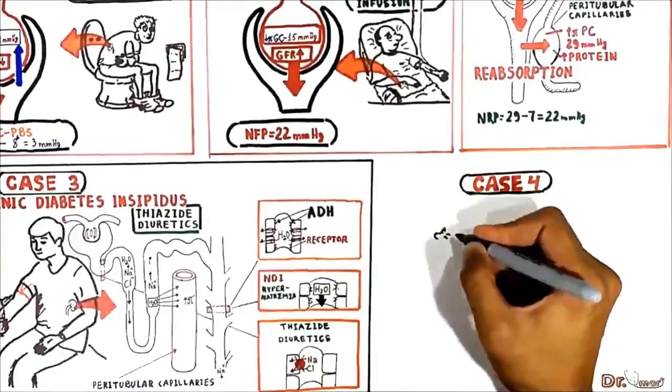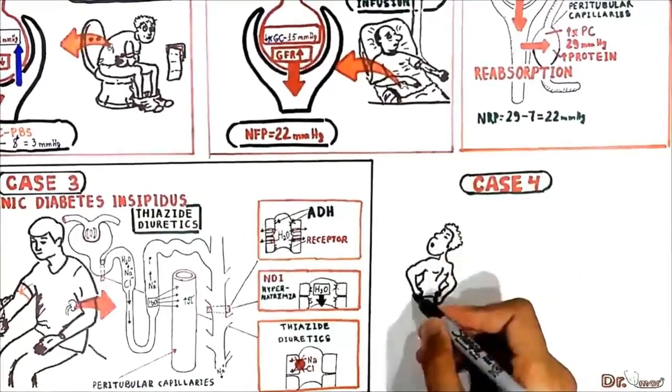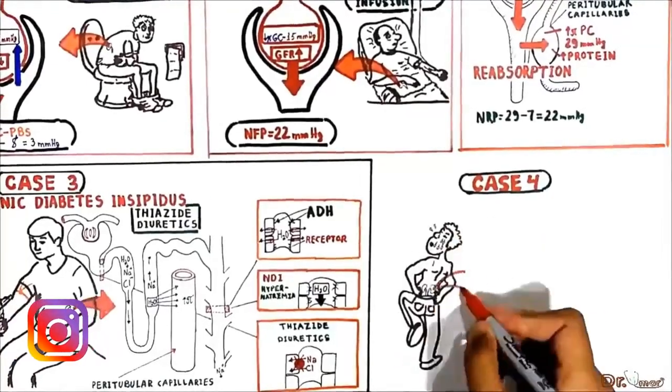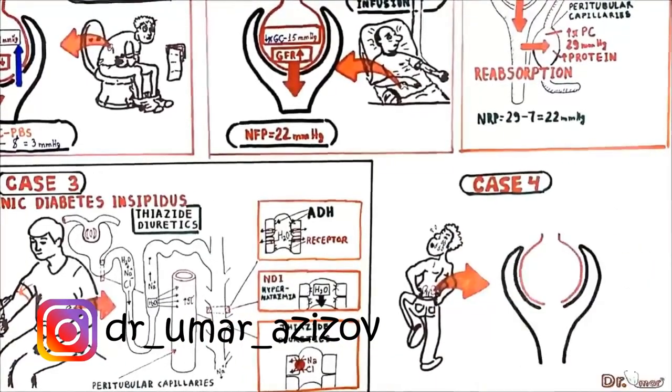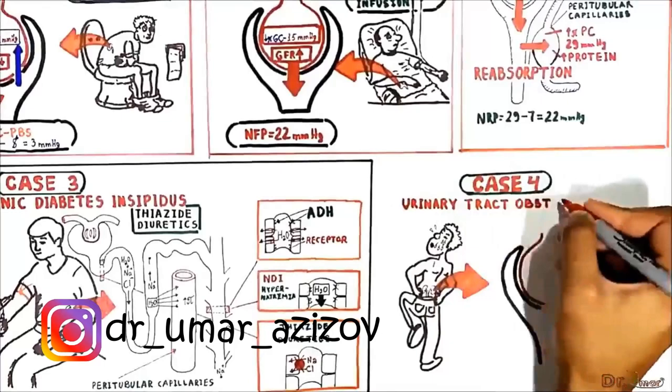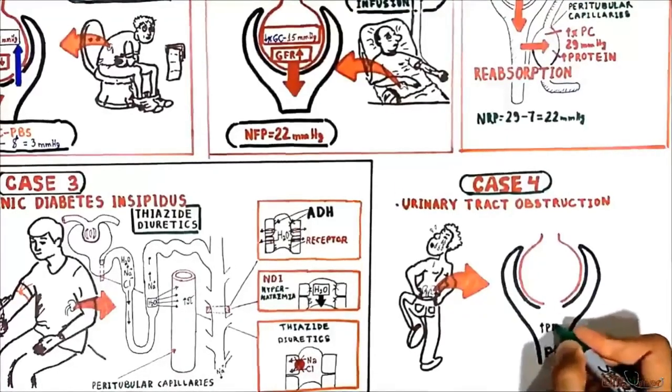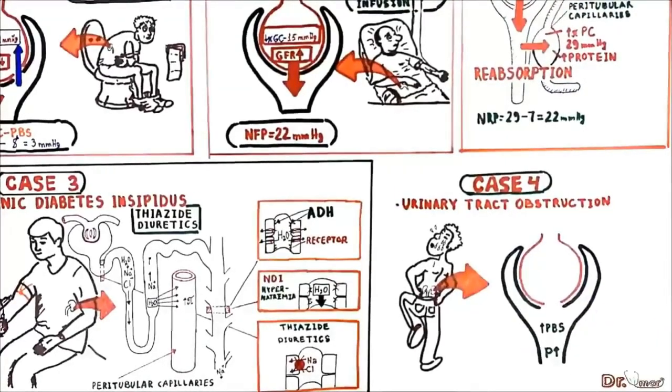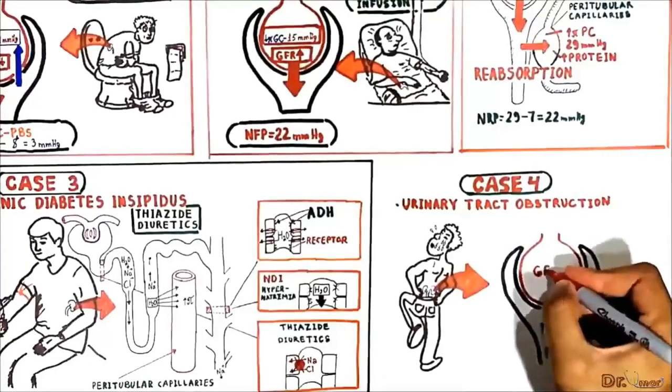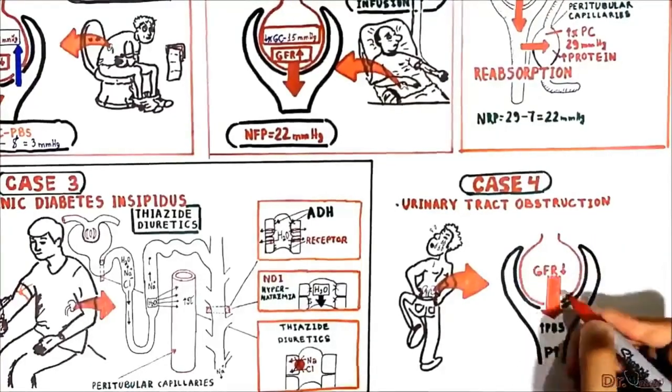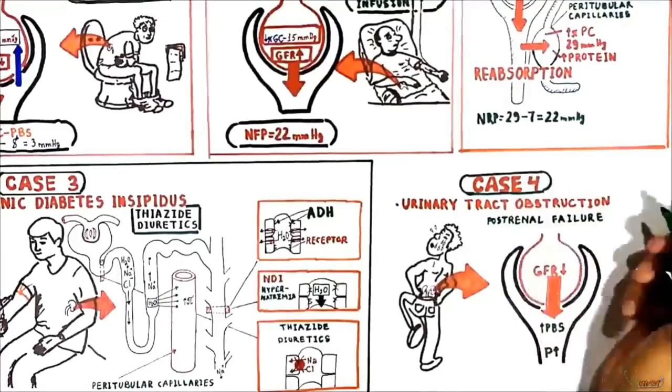Let's see what happens with GFR if the hydrostatic pressure in Bowman space increases. If a patient has a urinary tract obstruction such as blocked ureter or urethra, the urine flow is disturbed and pressure in tubular lumen builds up. Increased hydrostatic pressure of the Bowman space, which opposes filtration, causes decreasing GFR. This will lead to post-renal failure.